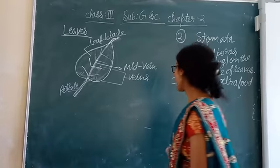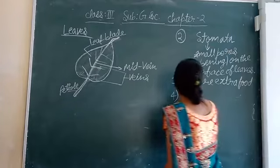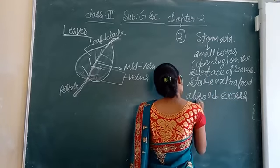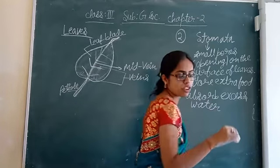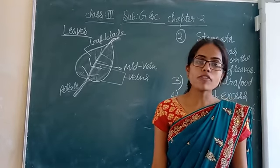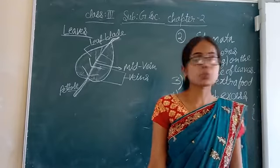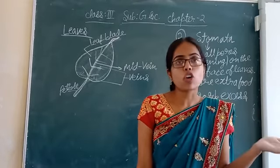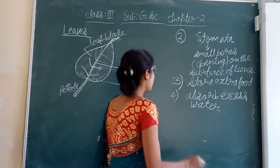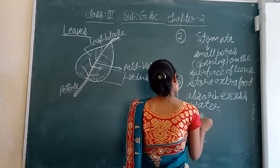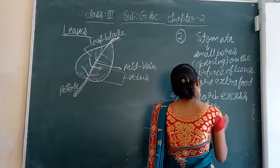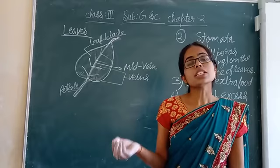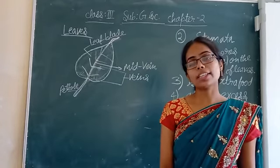The fourth function: plants absorb more water than required. This excess water is given off in the form of water vapor through the stomata. The process of giving off excess water through the leaves via the stomata is called transpiration.